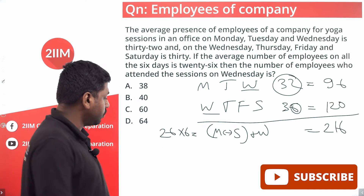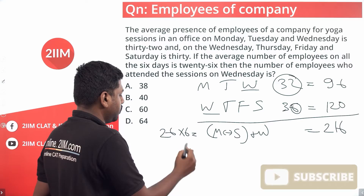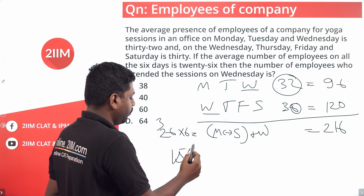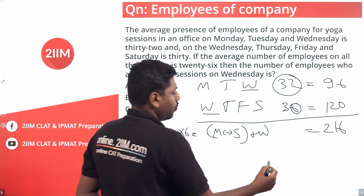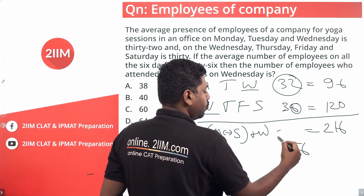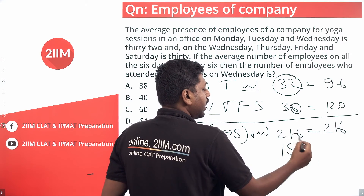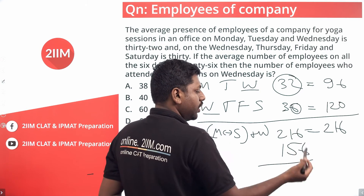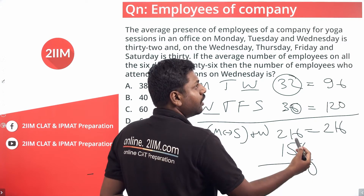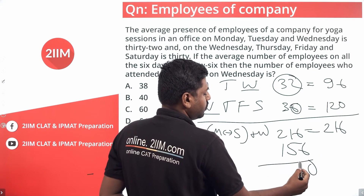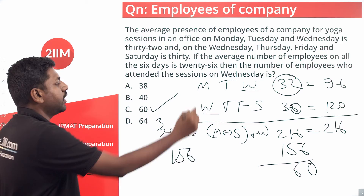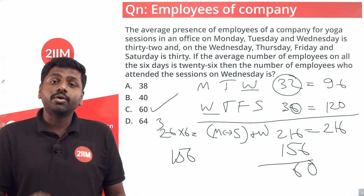The entire week total is 26 into 6, which is 156 — that is the total number of employees across all six days. 216 contains two Wednesdays, so you subtract 156 from 216 to get Wednesday's count: 216 minus 156 equals 60. So 60 employees were there on Wednesday.